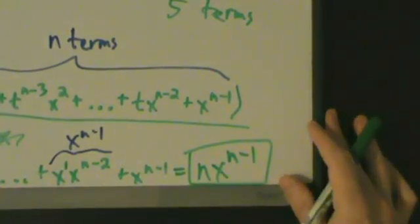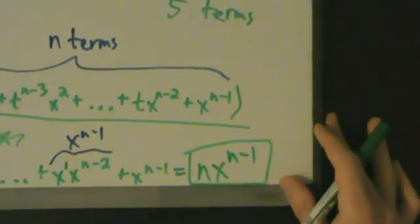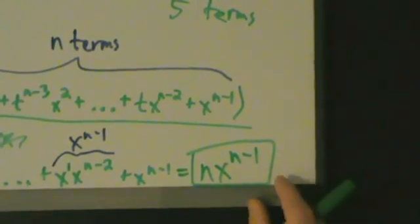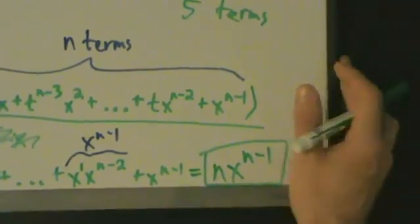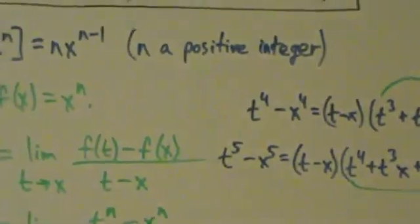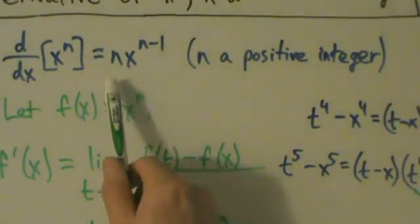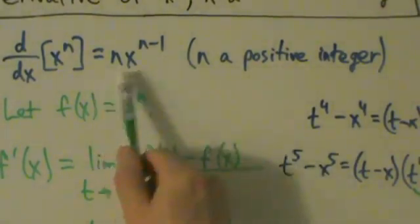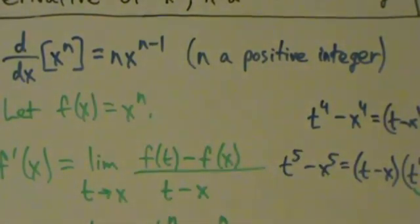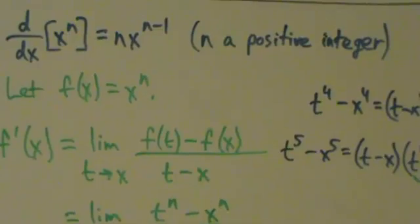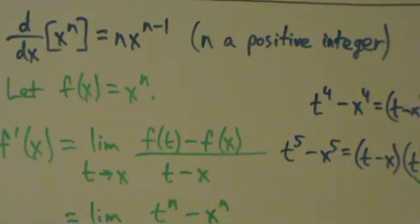So that's the proof that the derivative of x to the n equals nx to the n minus 1. This proof only works when n is a positive integer. Like we said at the beginning, this is actually true if n is any real number, but that's going to come a little bit later. For now, we've only proved it for positive integers.